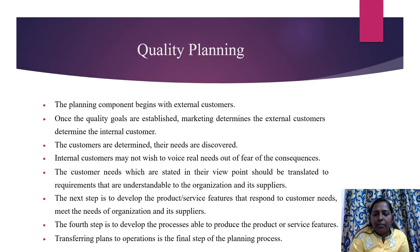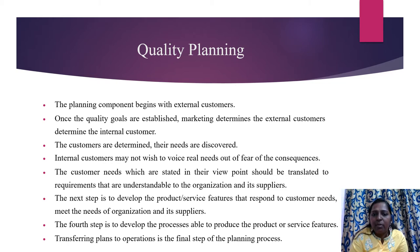The first process under Geron Trilogy is called quality planning. Here we have four steps. The first step is identification of the planning component, which are the external customers. Once the external customers are framed with the goals, they are going to determine the internal customers.